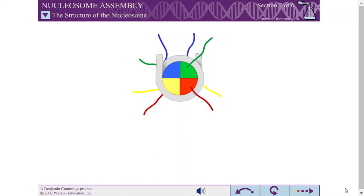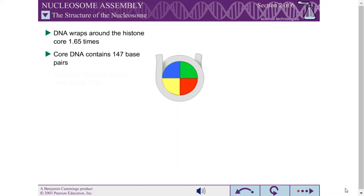The DNA strand wraps 1.65 times around the core, using a length of 147 base pairs. This core DNA always wraps around the histone core in precisely the same way, independent of sequence.